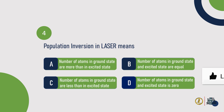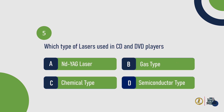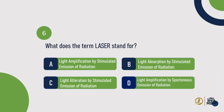Question 4: Population inversion in laser means — the number of atoms in the ground state is less than in the excited state. Question 5: Which type of lasers are used in CD and DVD players? Answer: Semiconductor type. Question 6: What does the term laser stand for? Answer: Light Amplification by Stimulated Emission of Radiation.